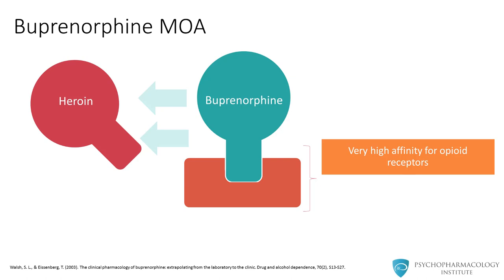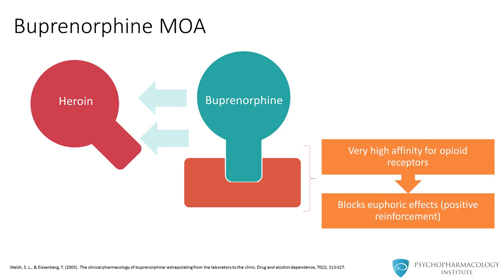The second key property of buprenorphine is that it has a very high affinity for the opioid receptor, meaning it binds very tightly to the receptors. If buprenorphine is attached to the receptor, other full agonists typically used, such as heroin, oxycodone, or morphine, will not displace buprenorphine. This is a critical benefit: while the patient is taking buprenorphine, even if they use heroin, they will not experience any euphoria. Both buprenorphine and methadone can block the euphoric effects and positive reinforcement of other substances.